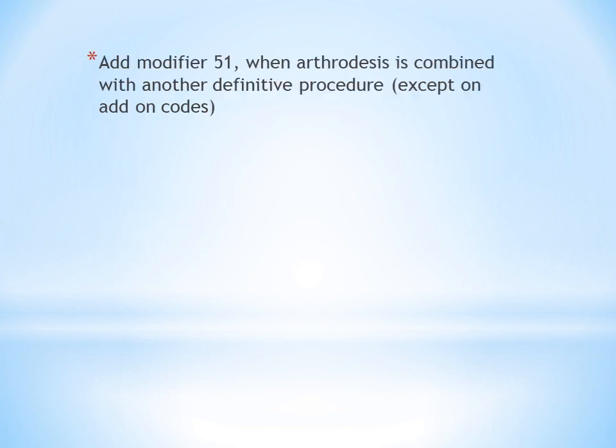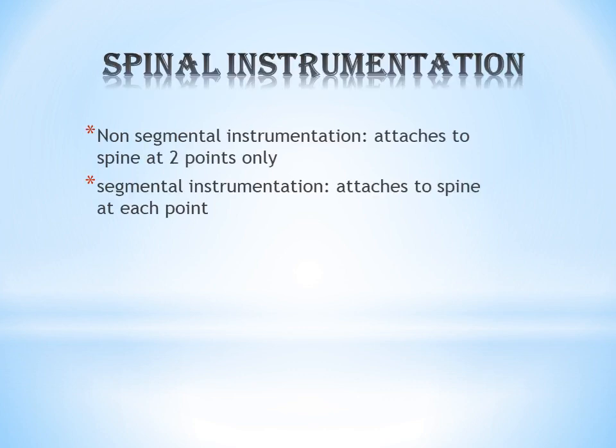One additional guideline: add Modifier 51 when arthrodesis is combined with another definitive procedure such as vertebral corpectomy, osteotomy, or laminectomy. However, Modifier 51 cannot be added to add-on codes, which are indicated with a plus sign. So in an exam question, if Modifier 51 is placed on an add-on code, you can eliminate that option.